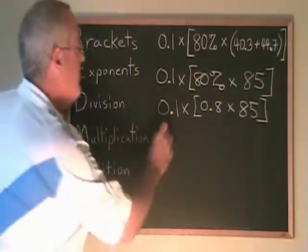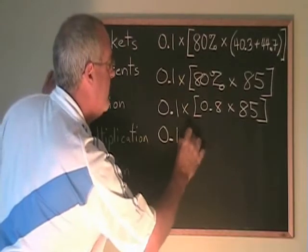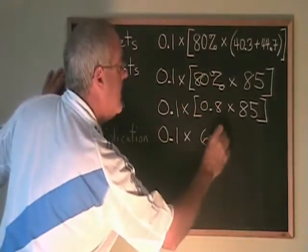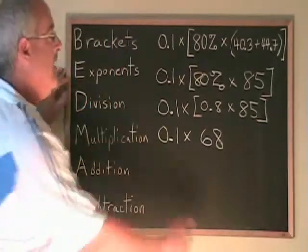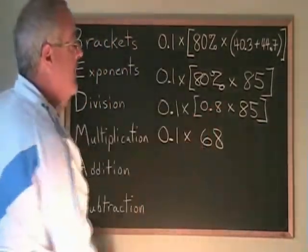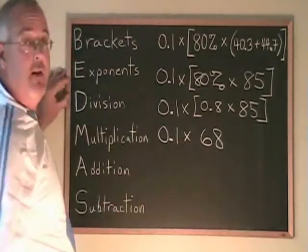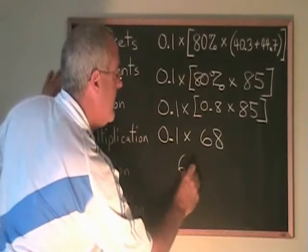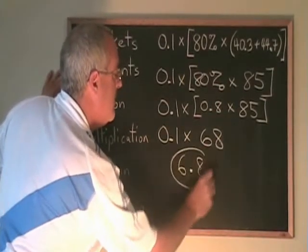Then 0.8 times 85 happens to be 68. So I have solved the multiplication inside the square bracket. I don't need the bracket anymore and I only have one operation left. 0.1 times 68 is equal to 6.8. I am finished.